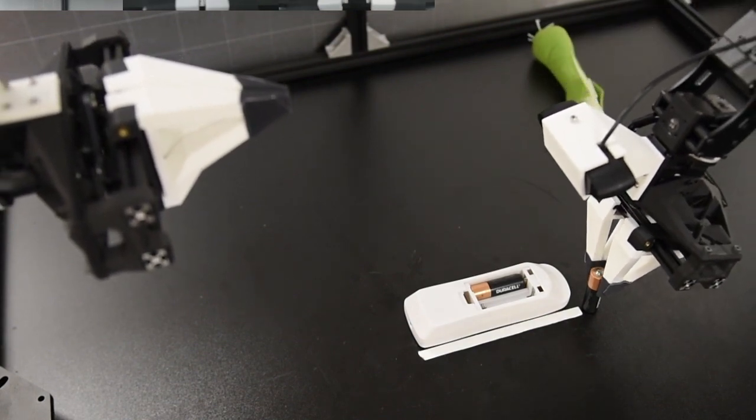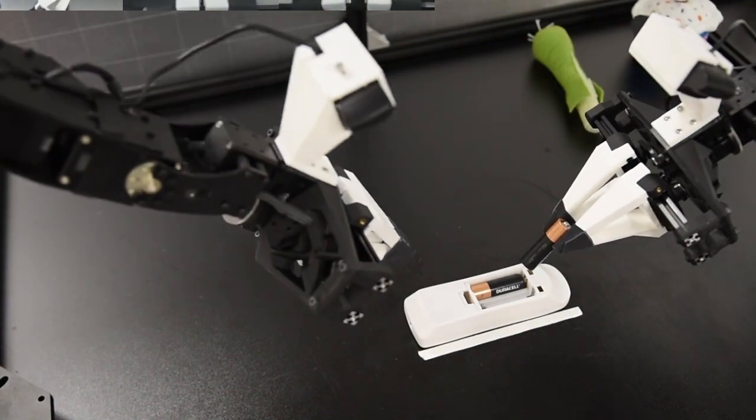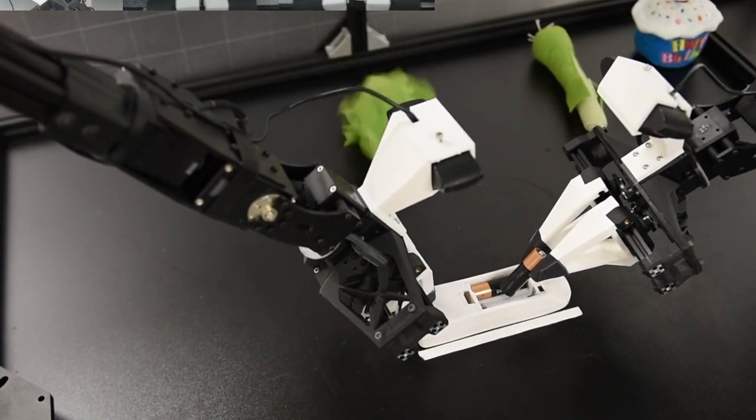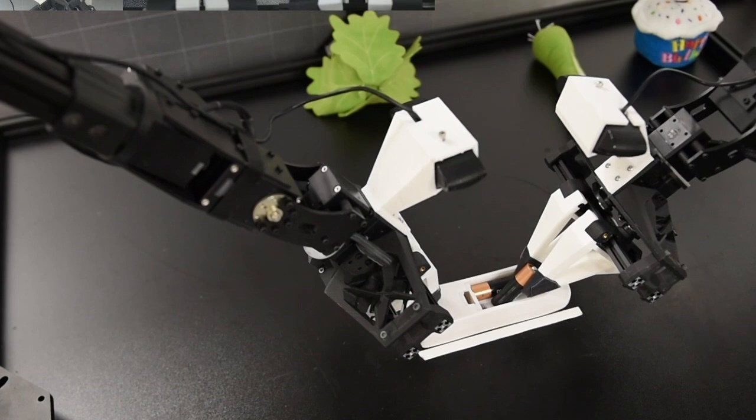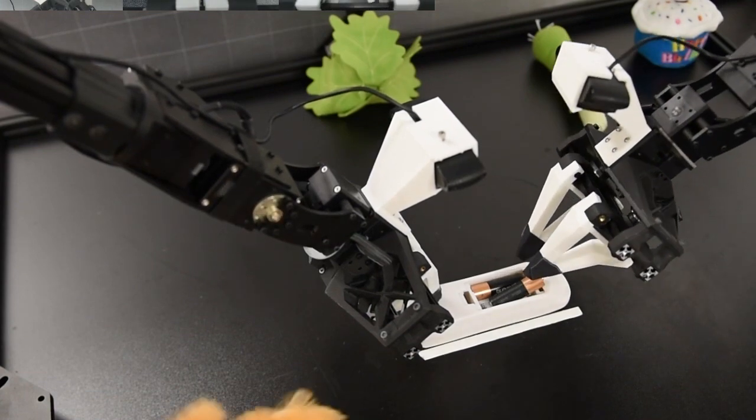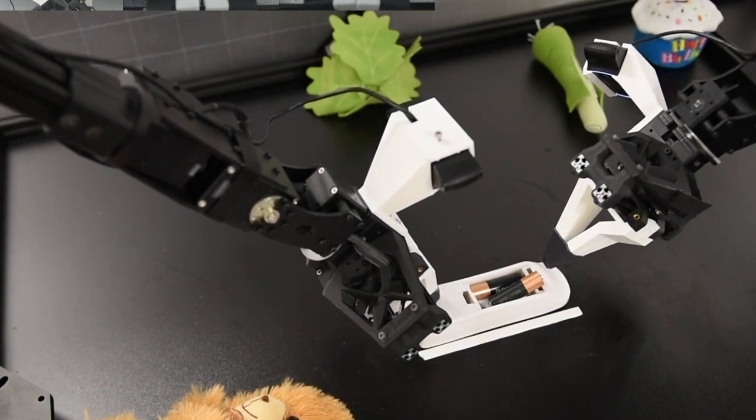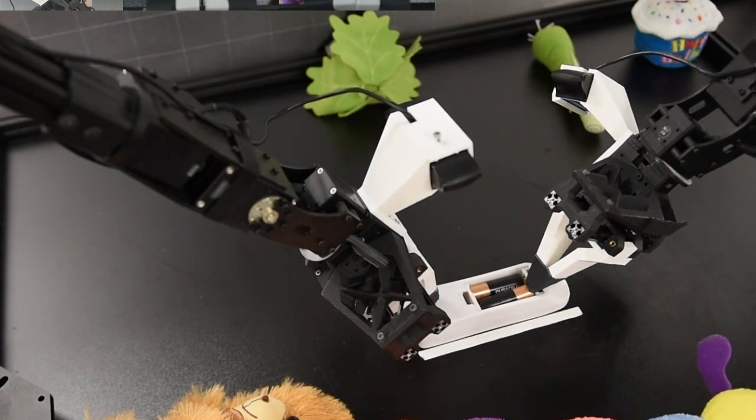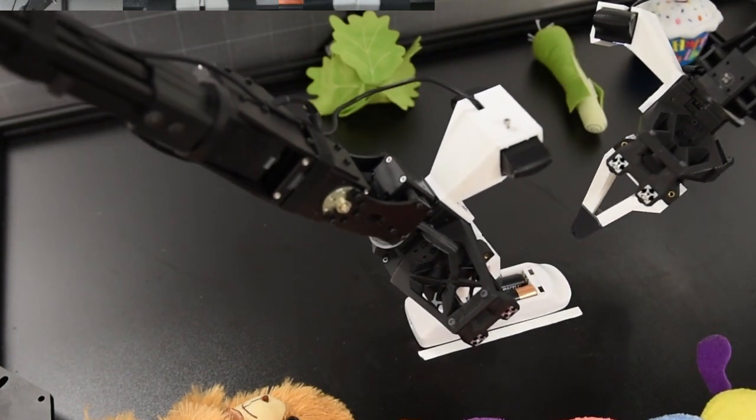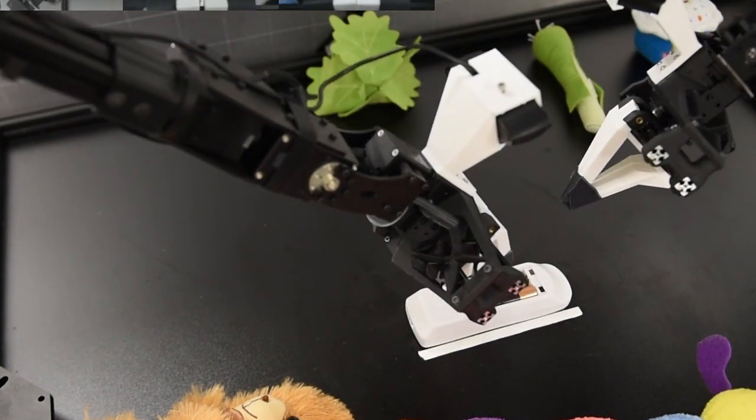We show example image observations, that is the input to the ACT policy, at evaluation time. There is a total of four RGB cameras, each streaming at 480x640. Two of the cameras are stationary, and the other two are mounted on the wrist of robots.